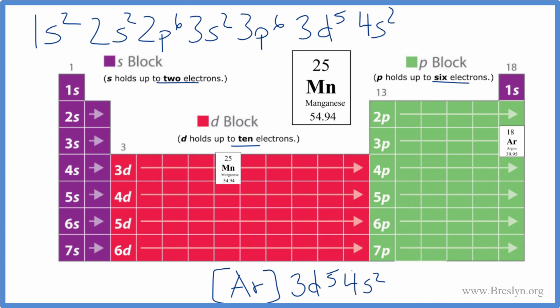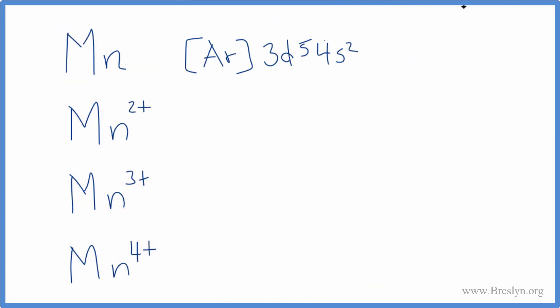So let's use this to write the configurations for the ions. With the Mn2+, the 2+ means we've lost two electrons. We're going to get rid of this 4s here. And that gives us the configuration here for the Mn2+ ion. For the Mn3+, we lose these two here and then we're going to lose one of these electrons in the 3d. So that'll be 3d4.